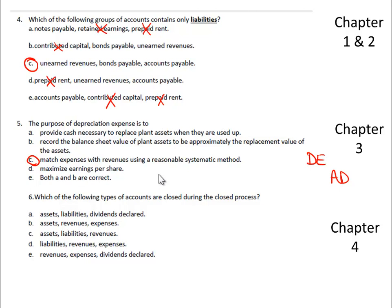Number six, which of the following types of accounts are closed during the closing process? Or I should say the closing process, not the closed process. You'll recall that we close our income statement accounts, or we close the income statement. So we're going to close revenue and expense accounts. And we'll also close dividends.